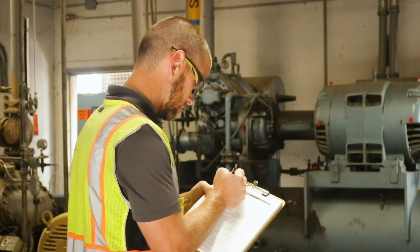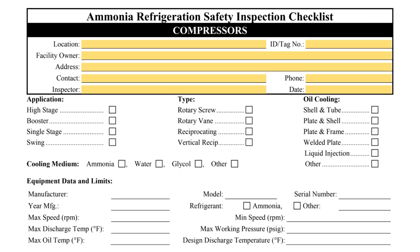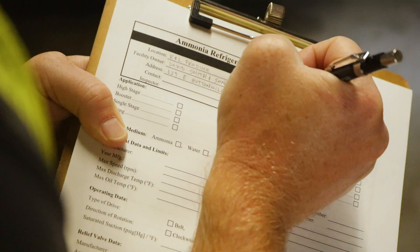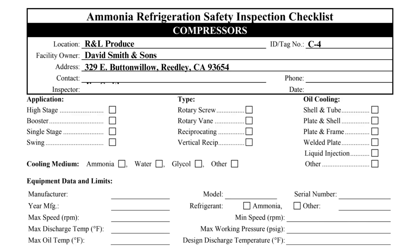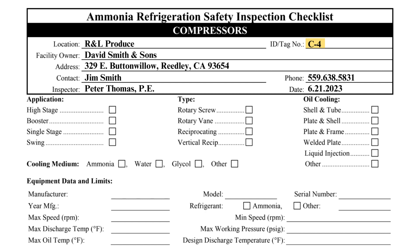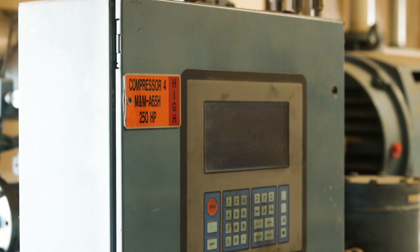The simplest part of completing a compressor checklist is filling out the contact information. Each IIAR 6 checklist requires the inspector to indicate the location, owner, and physical address of the system. The contact's name and phone number should be the facility representative responsible for ensuring the inspection is completed. Additionally, the inspector must write his or her own name and the date of the inspection. The ID or tag number belongs in the upper right corner and can typically be found on the equipment label or P&ID.